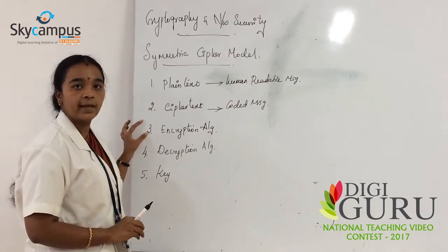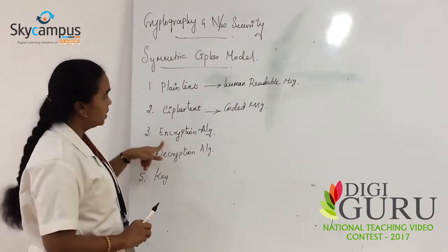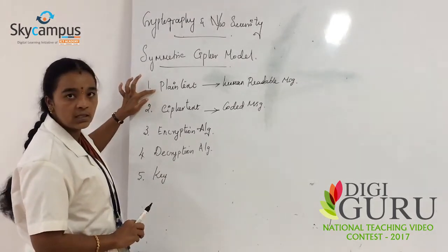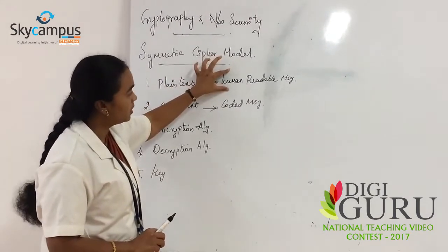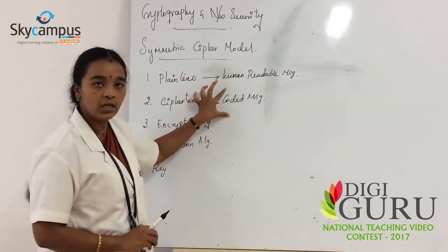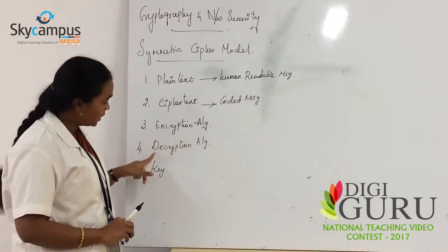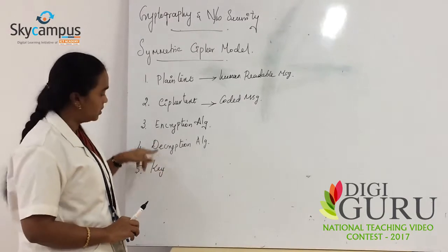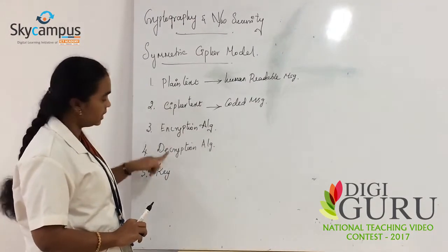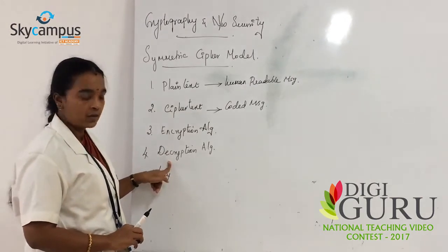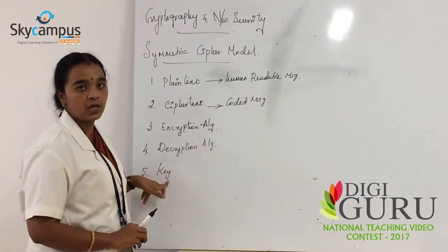Encryption Algorithm is the process of converting the Plaintext to Ciphertext — that is, human readable form into a coded message. The conversion from Ciphertext back to Plaintext is the Decryption Algorithm. We use a Key for secret purpose.